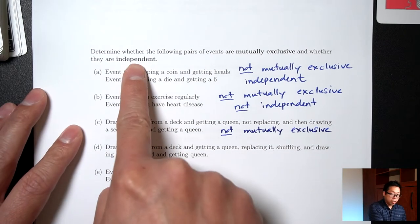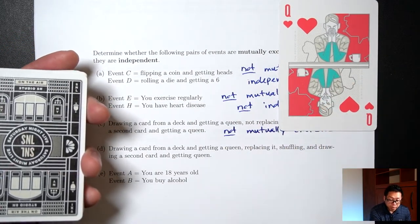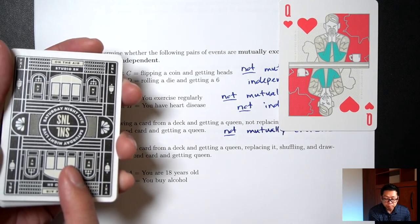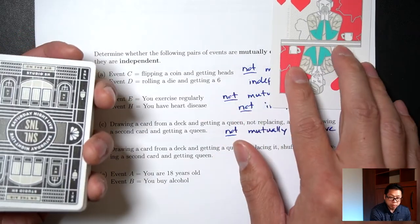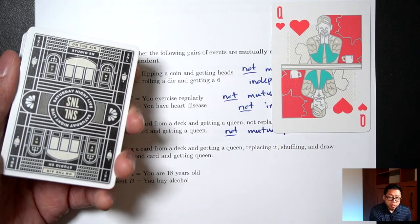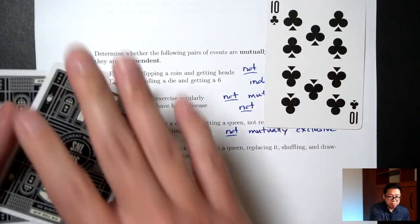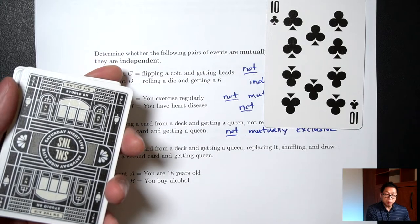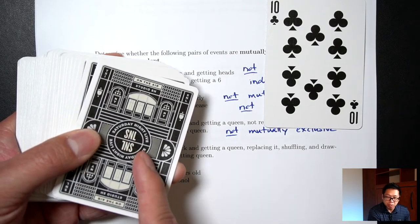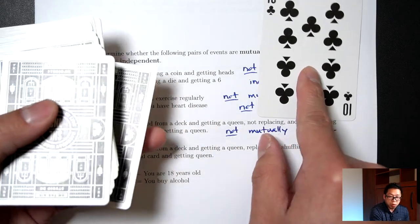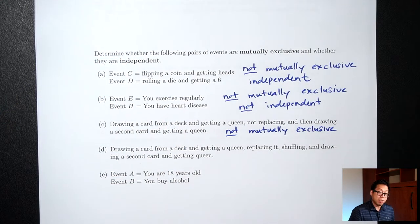Are these two things independent? If you draw a card and don't put it back, does that first draw affect the second draw? Yes, it does. In a deck of cards there are four queens. If I know the first card is a queen, there are only three queens left for my second draw. Whereas if the first card is a 10, I still have four queens left. So knowing what happens on the first draw affects the probability of getting a queen on the second draw. Because they do affect each other, this would be not independent.